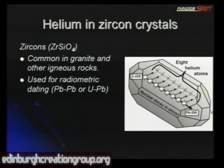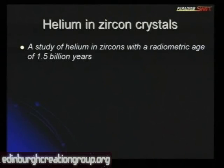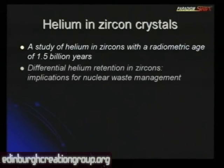One of the breakdown products in the uranium-238 decay chain is lead-206. Across the various steps, eight helium atoms are released. So inside a zircon crystal with uranium impurities, helium is being produced. If a zircon is billions of years old, you'd expect to find helium — though actually not much, because helium is a very light atom that diffuses out of the crystal and is lost. These zircons were given a radiometric age of 1.5 billion years, and the researchers discovered what they call differential helium retention.